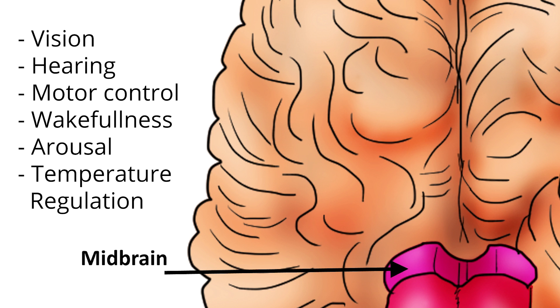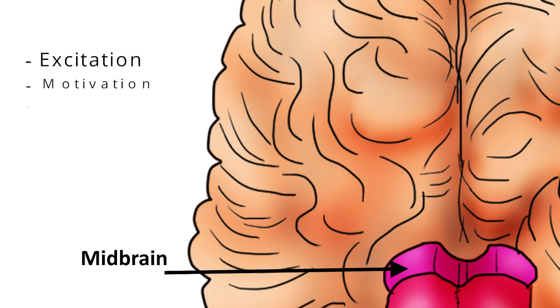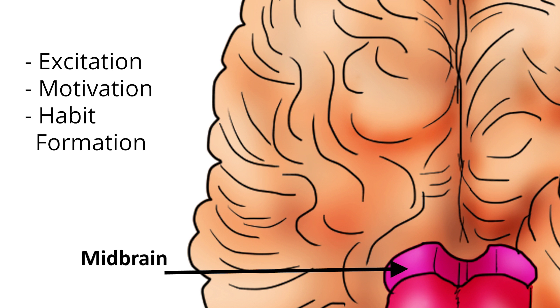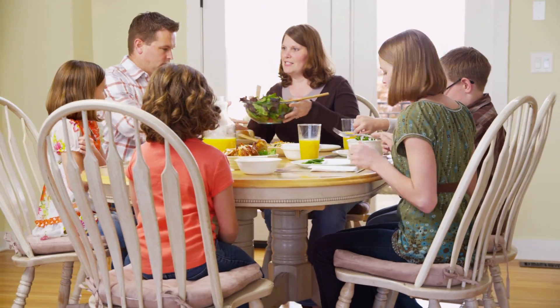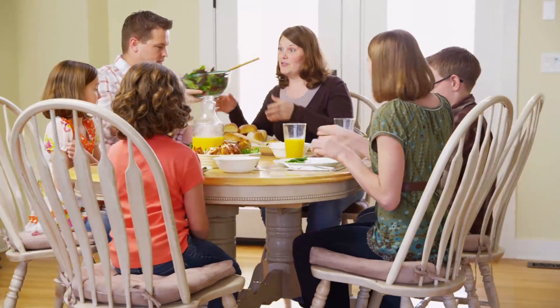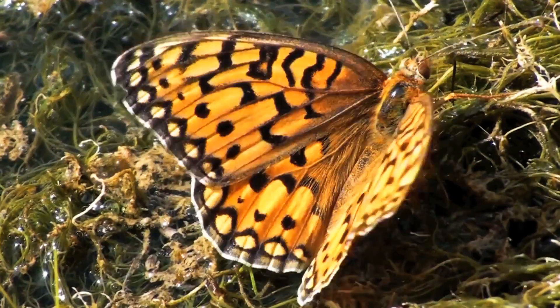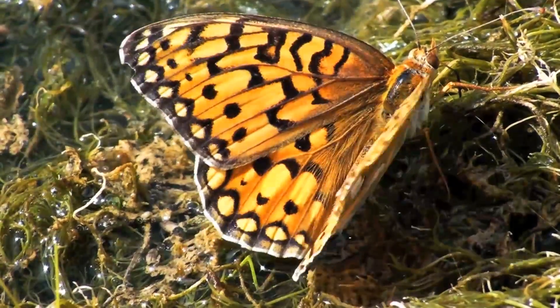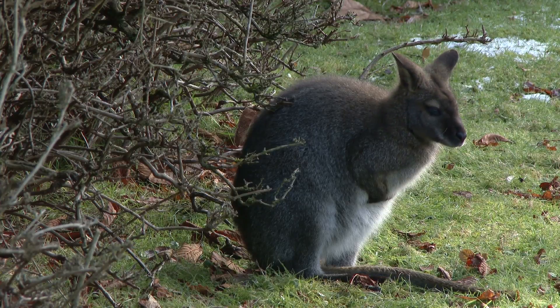Dopamine produced in the midbrain plays a key role in excitation, motivation, and habit formation in every species of animal, from humans to butterflies and kangaroos.